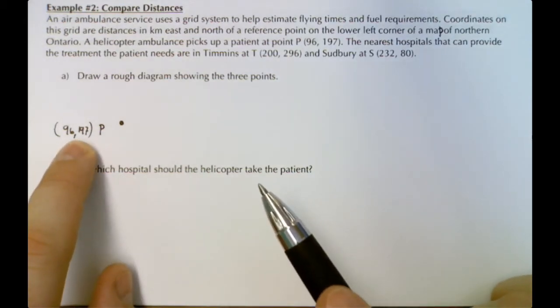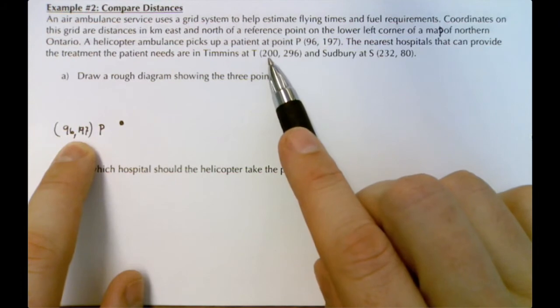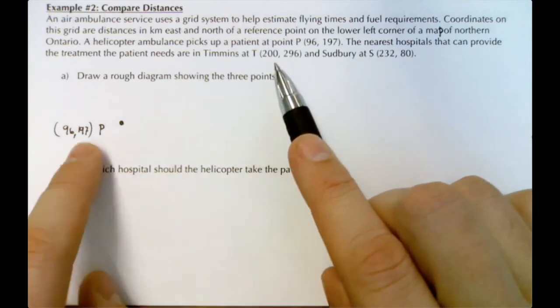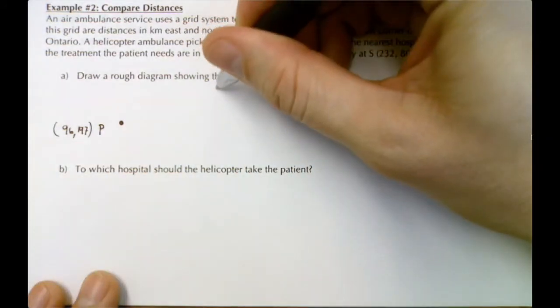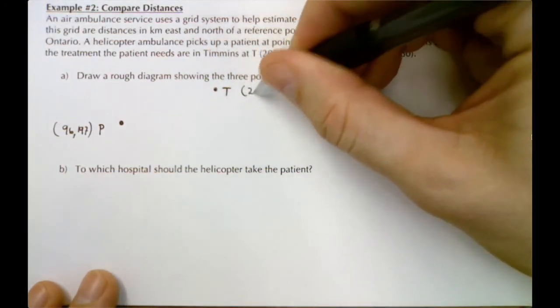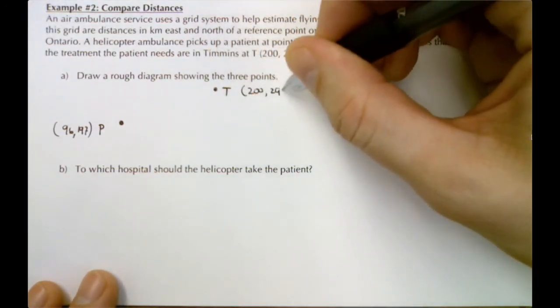Point P is (96, 197). If we wanted to graph Timmins, Timmins is 200 on the x scale, so that'd be further to the right, and 296, which is above 197, so I'm going to put Timmins up here: (200, 296).